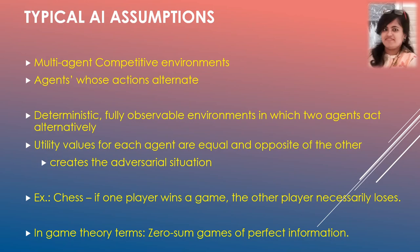A very specific example of this scenario is gaming. Take the example of chess: two players are in the game, and if one player wins the other will necessarily lose. The utility value for the winner is plus one and for the loser is minus one. In game theory terms, these are zero-sum games of perfect information — and these are the assumptions you need to maintain for adversarial search.